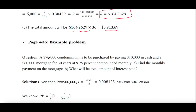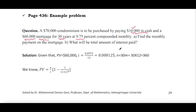The second problem: a $70,000 condominium is to be purchased by paying $10,000 in cash, and the remaining $60,000 is to be paid by a mortgage for 30 years at 9.75% compounded monthly. So M equals 12, since it is compounded monthly, and J equals 9.75%. The present value is $60,000, because he already paid $10,000 in cash and wants to mortgage the remaining $60,000. So I equals J divided by M.